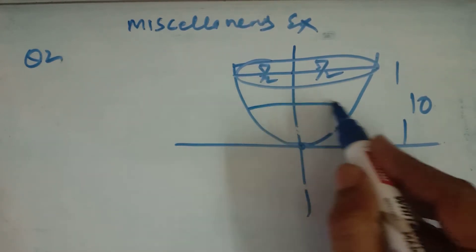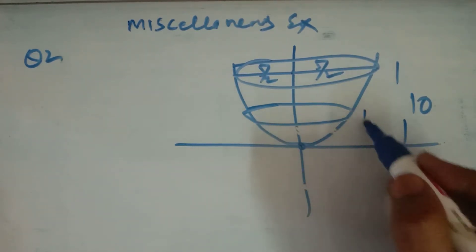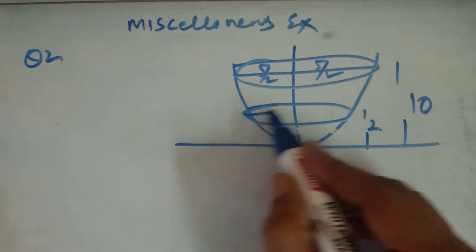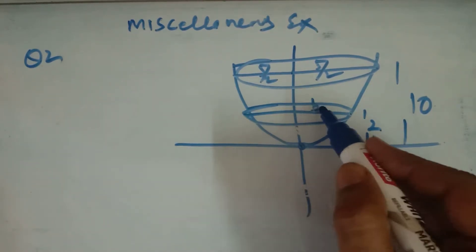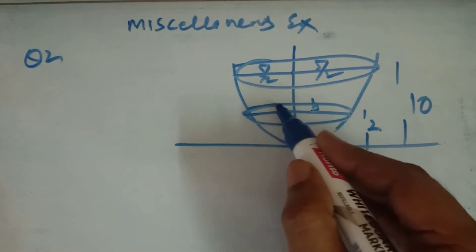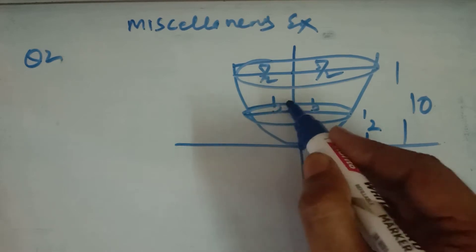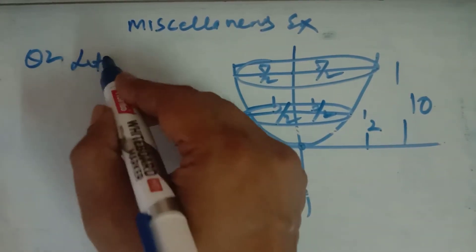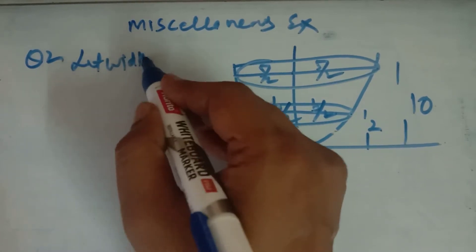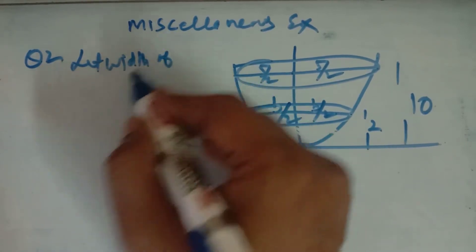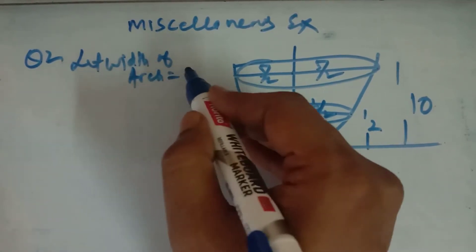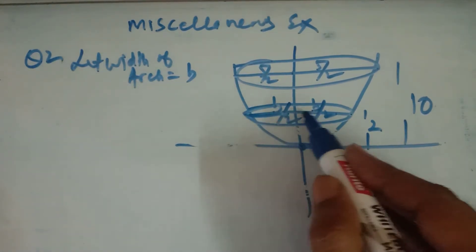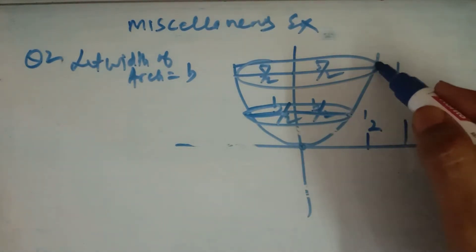Vertex से 2 meter की दूरी पर कितना wide है — let this distance be 2 and you have to find this width. Let the width of the arc be B, so this will be B/2 and B/2 because it is symmetrical.